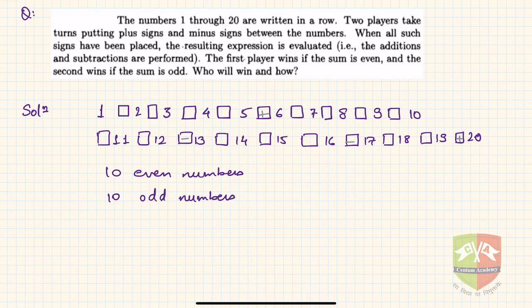Now if you have 10 odd numbers, let's take case by case. 10 even numbers are nothing but 2, 4, 6, 8, 10 likewise till 20, and 10 odd numbers are 1, 3, 5, 7 likewise till 19, right?